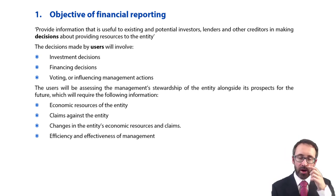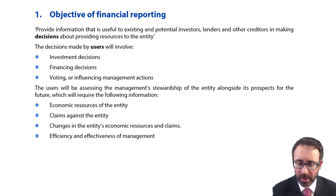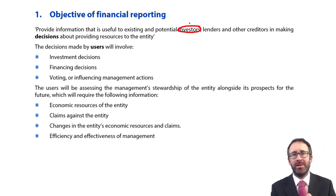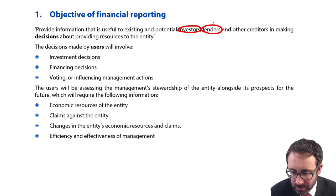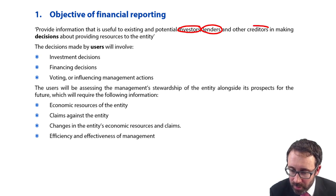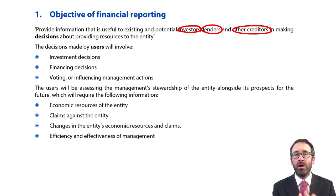First of all, we're going to look at what the objective of financial reporting is within chapter one of the framework. It starts off by introducing us to who the users of the accounts are. So we're looking at your investors within equity, investors in debt, lenders — so banks and other financing institutions — and then your other creditors, such as suppliers, because the investors, the lenders, and the creditors want to understand what the business is doing and how it is being managed.